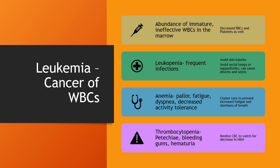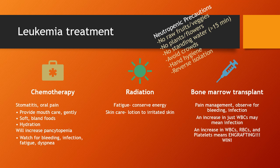With anemia from leukemia, the patient shows pallor, fatigue, dyspnea, and decreased activity tolerance. Clustering care is a helpful nursing intervention to prevent increased fatigue and shortness of breath. With thrombocytopenia, look for petechiae, bleeding gums, and hematuria, but also monitor for occult internal bleeding by watching for a decrease in H&H to rule out slow GI bleed. Treatment for leukemia includes chemotherapy, radiation, and bone marrow transplant. Chemotherapy results in stomatitis — provide gentle daily mouth care, soft bland foods, and hydration — and also worsens pancytopenia, increasing risk for bleeding, infection, fatigue, and dyspnea.